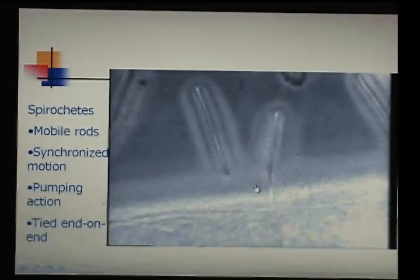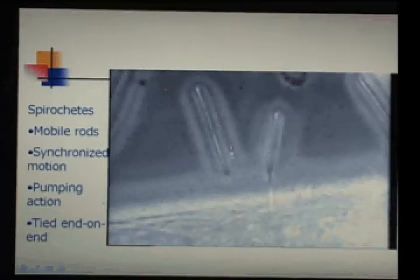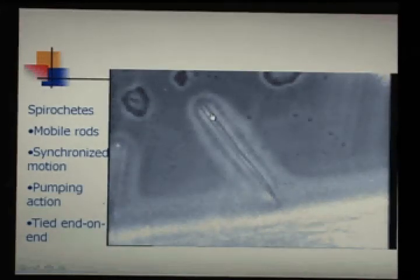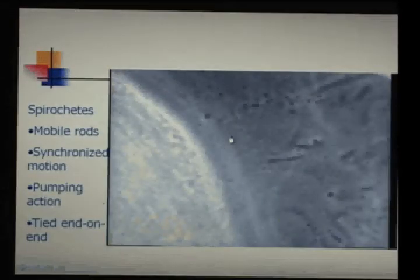But we do know that spirochetes are very important in disease function. Here's a rod with many spirochetes tied to it, creating that ciliary action. It almost looks like an organism to itself, even though it's several bacteria cooperating together.